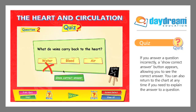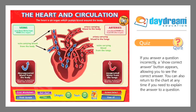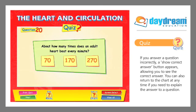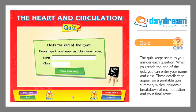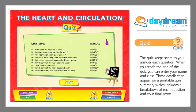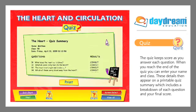If you answer a question incorrectly, a Show Correct Answer button appears, allowing you to see the correct answer. You can also return to the chart at any time if you need to explain the answer to a question. The quiz keeps score as you answer each question. When you reach the end of the quiz, you can enter your name and class. These details then appear on a printable quiz summary, which includes a breakdown of each question and your final score.